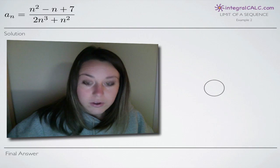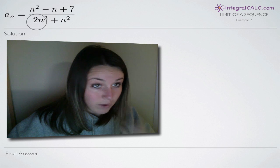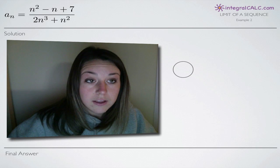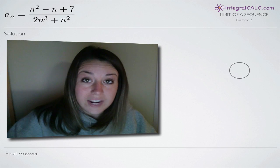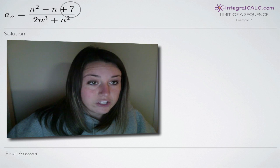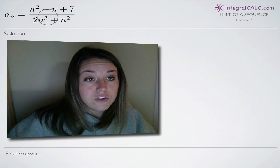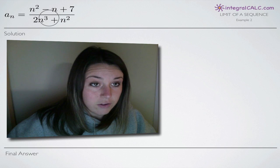So in order to find the limit of this sequence, because it's in the form of a rational function, we've got a fraction here, the easiest way to go about finding the limit is to divide through this whole fraction by the variable n but raised to the highest degree that we find in our function.